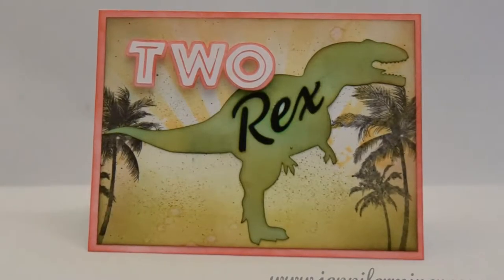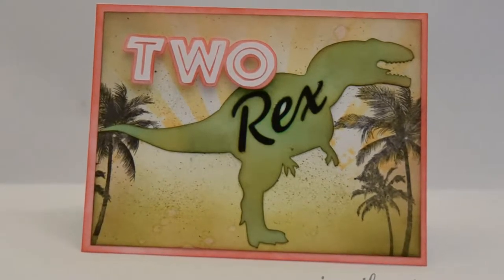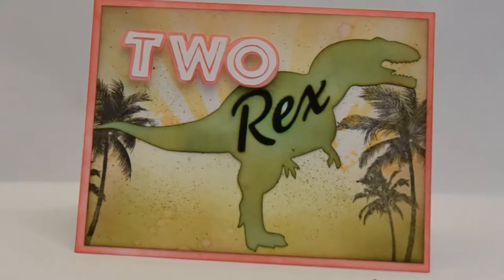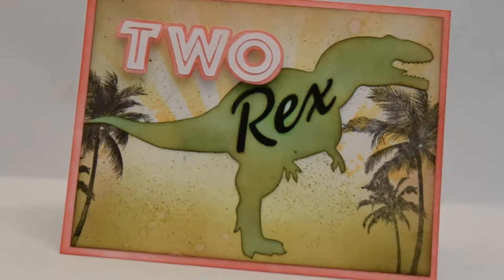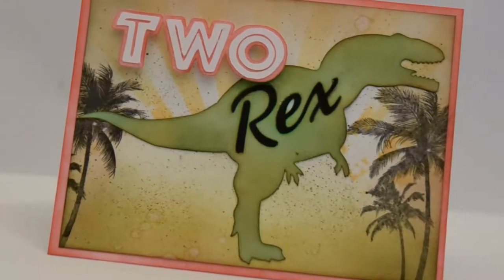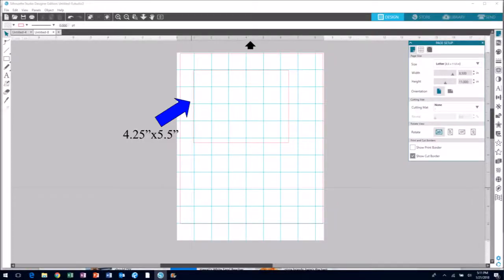Hey guys, it's Jennifer. Welcome to today's card, a fun little birthday card for a two-year-old boy featuring an awesome T-Rex, because don't all boys love dinosaurs? Today's shapes will be cut out using the Silhouette Cameo.